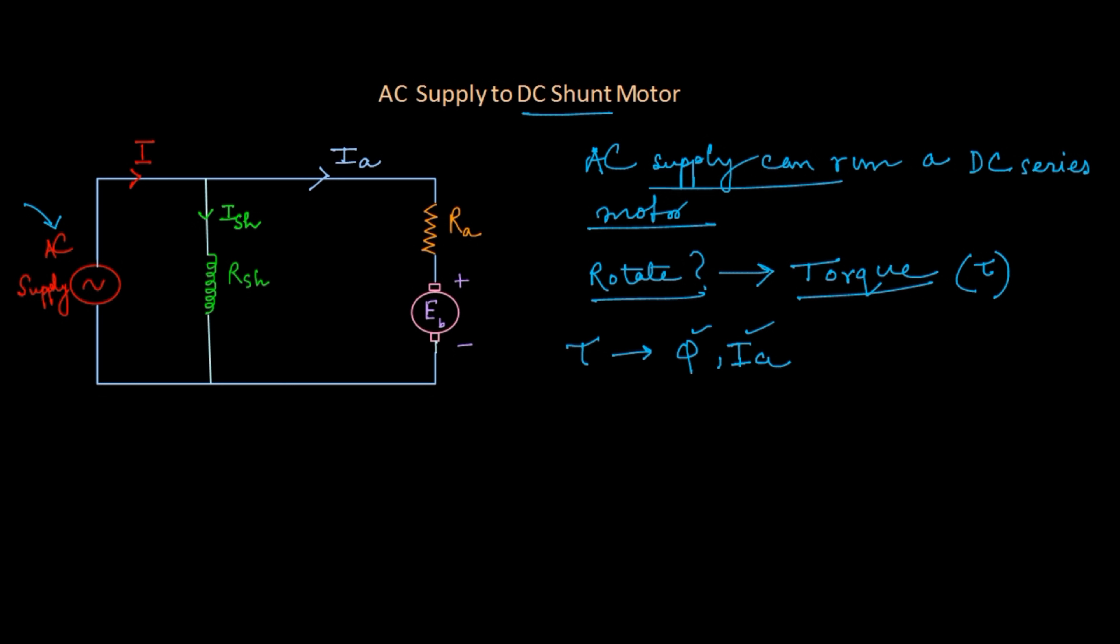Whenever you want to create flux then you have to create a coil. That's why the shunt coil or field coil is designed. Now if you are applying an AC supply, then a factor called inductance comes into action in the circuit.